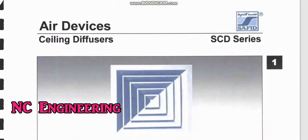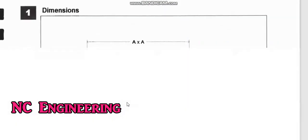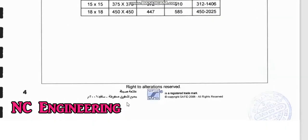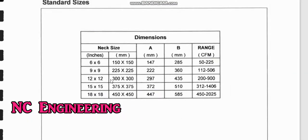First we will see the selection of the square ceiling diffuser. It is very easy. There is one table you can select from. There are sizes of the diffuser and a CFM range.